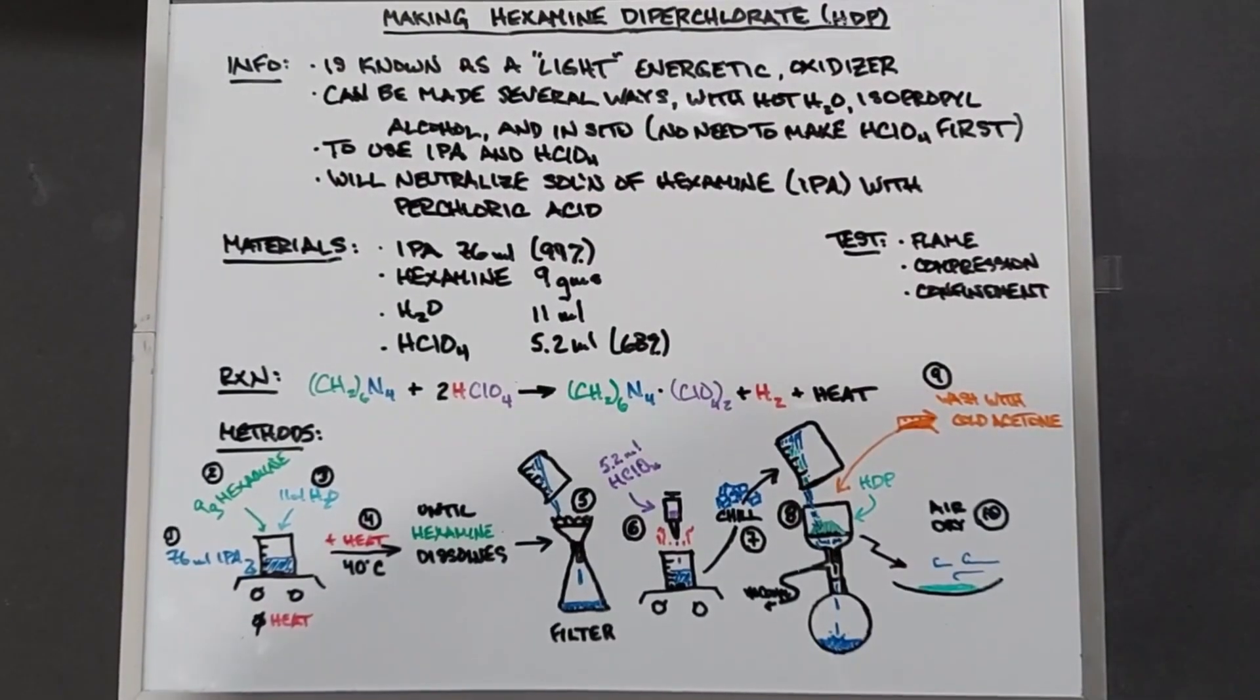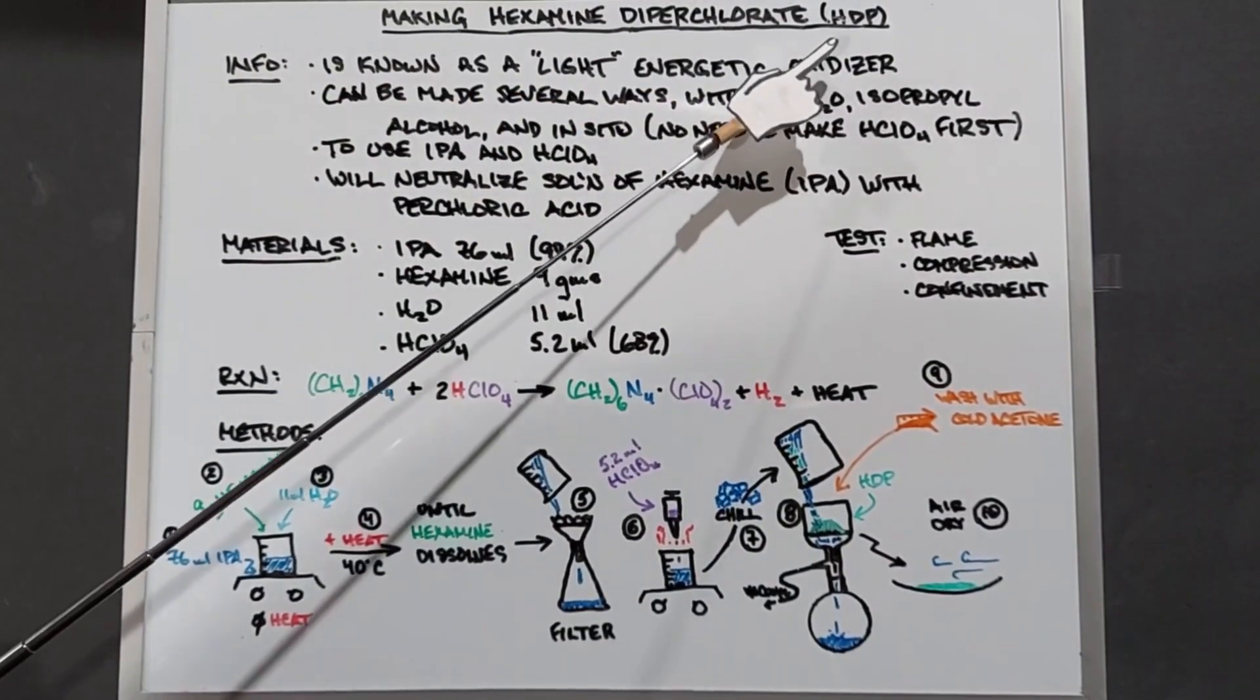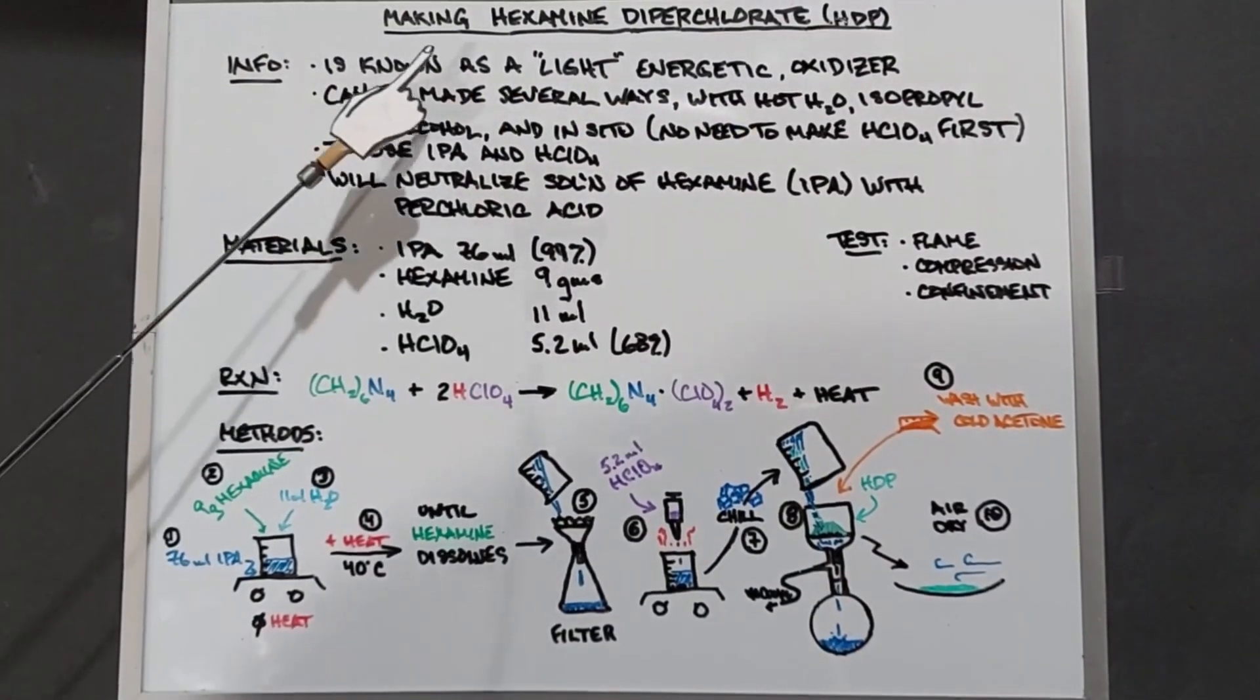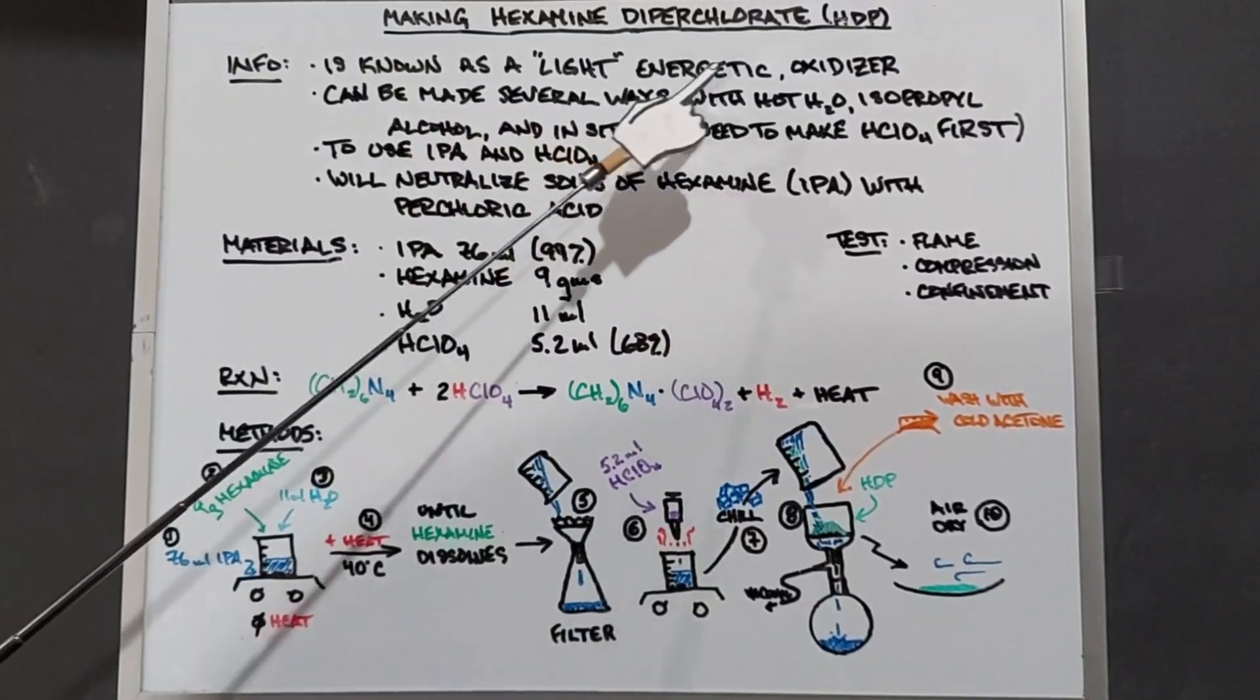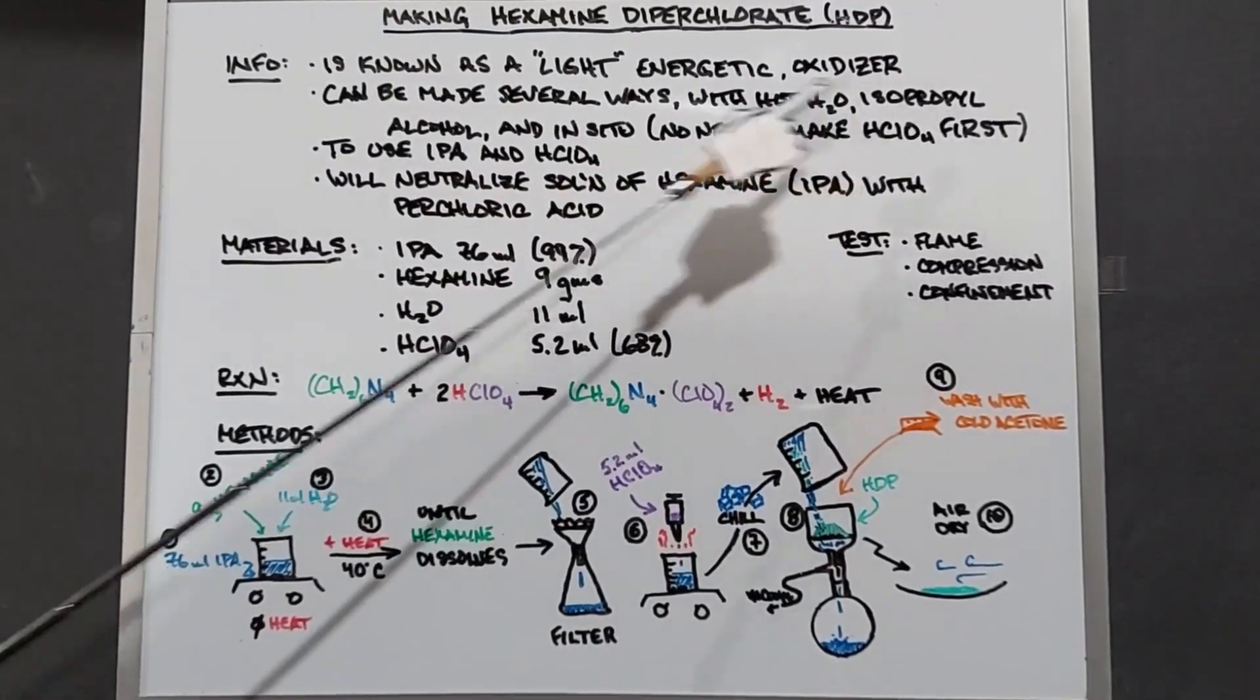Now that I have some perchloric acid, let's go ahead and make some hexamine diperchlorate, otherwise known as HDP. HDP is known as a light energetic and an oxidizer. It can be made several ways with hot water, isopropyl alcohol, and in situ using hydrochloric acid.